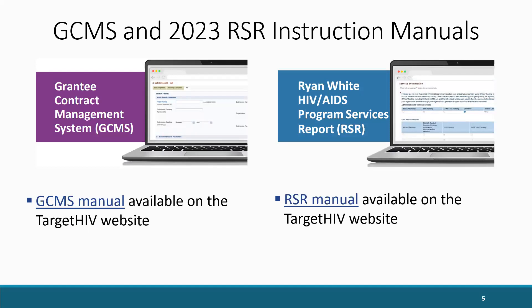Before I begin with an overview of the RSR, I would like to make everyone aware of the GCMS Instruction Manual, which is available on the TargetHIV website. This will provide you with step-by-step instructions on how to add any additional or missing contracts you may need for your recipient report. Also, the 2023 RSR Instruction Manual is available on the TargetHIV website. The RSR Manual is an invaluable resource that can be used when completing your report, and I strongly recommend looking over it before you complete your RSR.